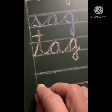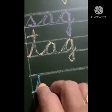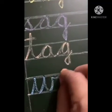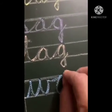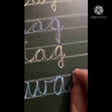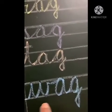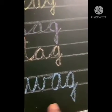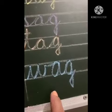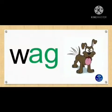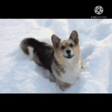The last word in this family starts with 'W'. Write W, A, G — WAG. Here the dog is wagging its tail.